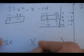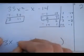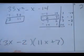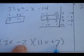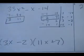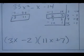So I'm going to have 3x, 11x, minus 2, plus 7. Let's double check. Negative 22, 21 makes negative 1. 33x squared, negative 14. Bada bing, bada boom. Got through with it.